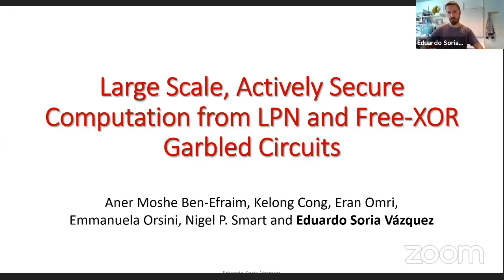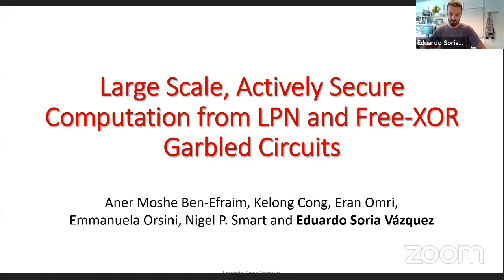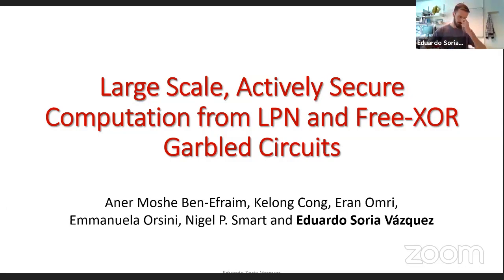This talk is also going to be about garbled circuits, but with a different goal from what Karsten was talking about. Karsten was talking about the problem of identifiable abort. What we look into in this paper is how to do garbled circuits when you have many, many parties, because as Karsten was describing, you have this kind of blow-up in the size of parties for your gates.